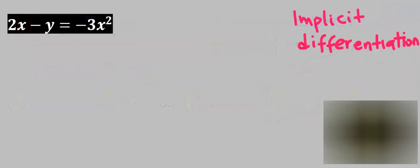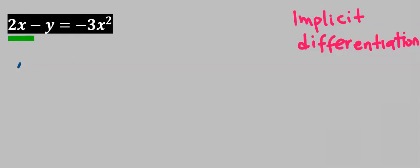Alternatively, we can apply implicit differentiation. Differentiate 2x and you're going to get 2. Next, differentiate y and you're going to get 1. However, whenever you differentiate y, you're going to multiply it with dy/dx according to the rule of implicit differentiation.